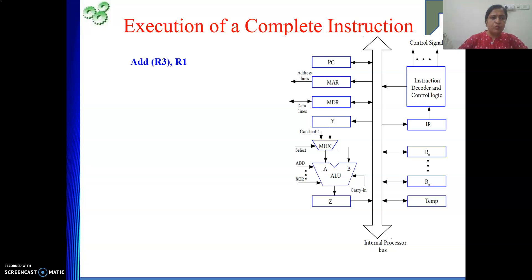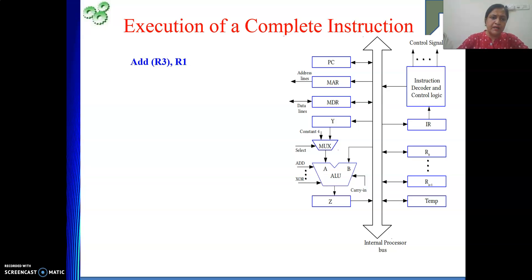Suppose my instruction is: Add (R3), R1. When we see this instruction, we should understand what it is telling. What this instruction asks me to do is: there is something in memory whose address is in register R3. With that content, I will add the content of R1 and then store the result into R1. So one operand is in R1, and the other is in memory at the address held by R3. Both are added and the result goes into R1.